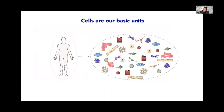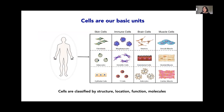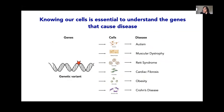Cells are really the basic unit of life and they come in many shapes, types, and forms that characterize their types and functions. We can classify them by their structures, by where they are in the body, by the functions they execute, and also by the molecules they express. Cells are essential for understanding the genes that cause disease.